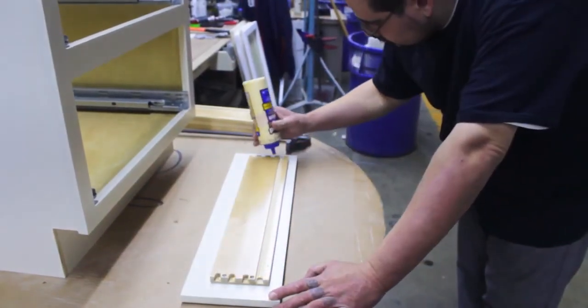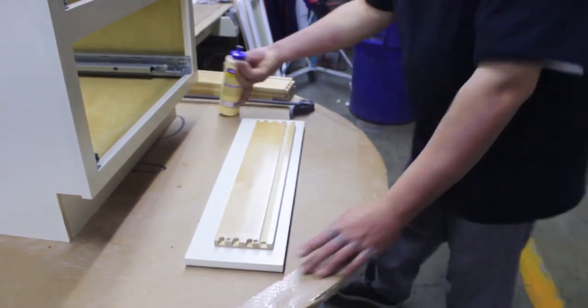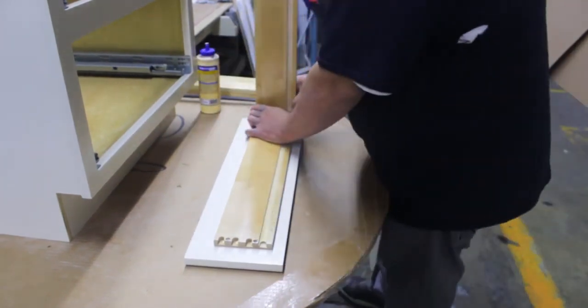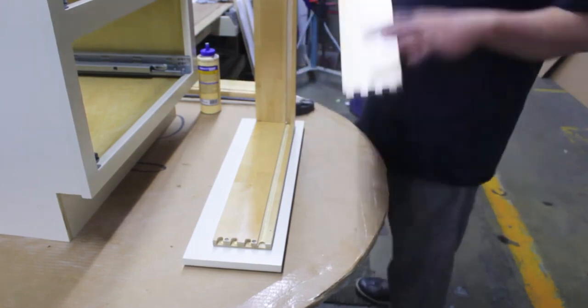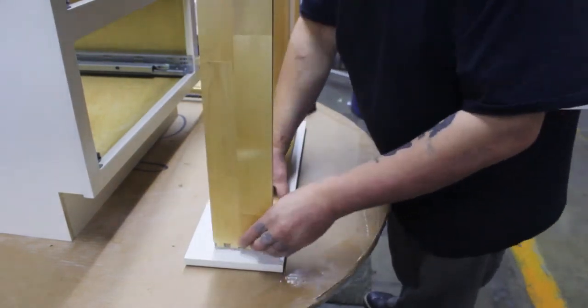Set the drawer face down and place a bead of glue on each groove and tooth on the drawer. Using a rubber hammer or a clamp, attach the drawer side to the drawer front via the dovetail.